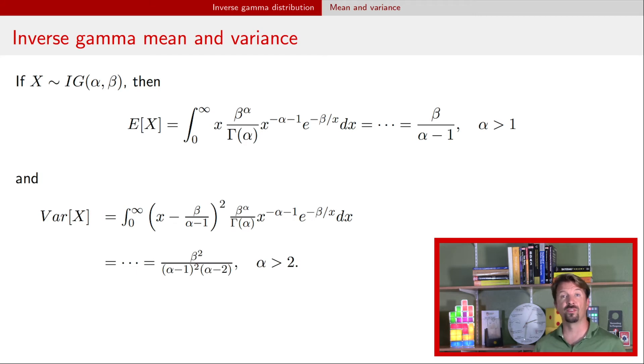Similarly, for the variance, we have the formula that's here. It's beta squared divided by alpha minus 1 squared times alpha minus 2. And similarly, if alpha was less than 2, we would get a negative variance using this formula. And so this formula is only valid for alpha being greater than 2.